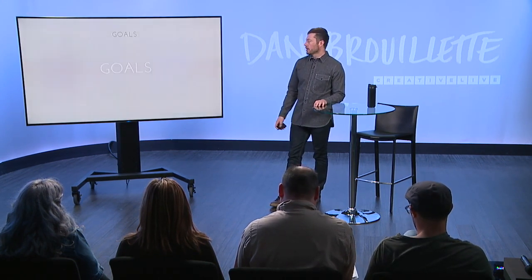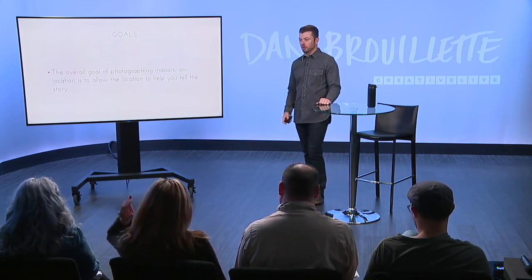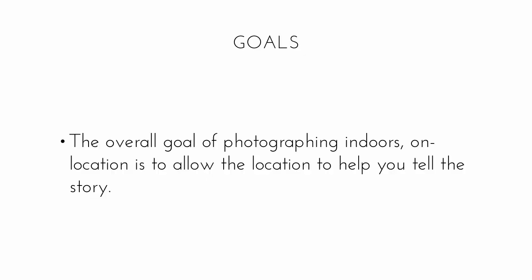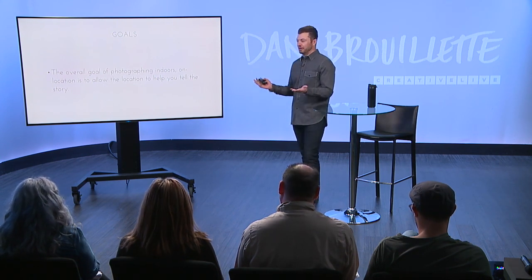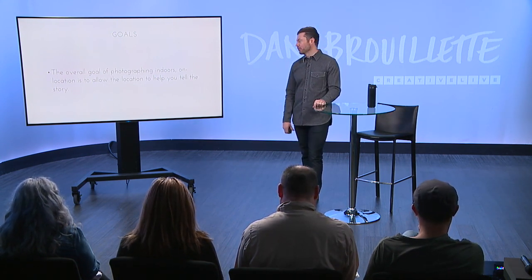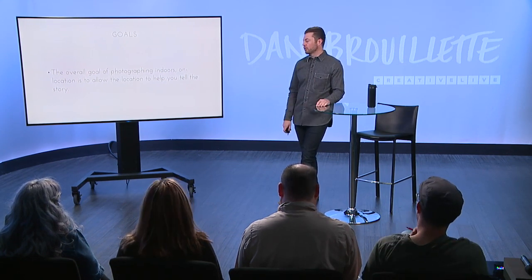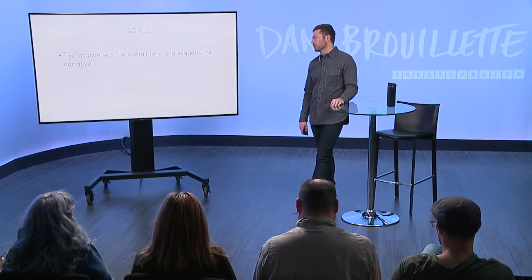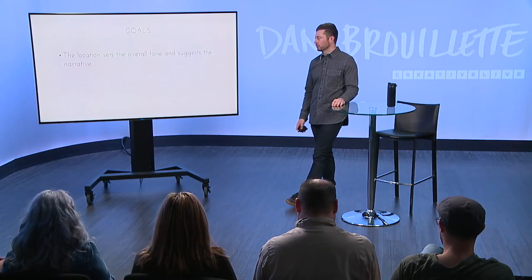With the goals, our goals for the location shoot are this. The overall goal of photographing indoors on location is to allow the location to help you tell the story. I want a great photo of the subject, but with any environmental portrait, I want the location to be a major part of that. It can be your kitchen or any location — any environment fits that whole story. You want that location, as simple or as complex as it might be, to help tell that story. The location will set the overall tone and suggest the narrative. You want the location to speak to the people so it's not confusing — everything is in place for a reason and looks understandable, believable, and authentic.